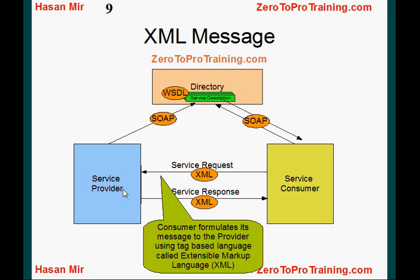XML is a tag-based language. If you want to see what a tag-based language looks like, go to your browser, open up any web page, and go to view page source, or whatever that option is called in your browser, and you can see the tag-based language — because HTML is also a tag-based language, and XML looks very similar. So now we understand where XML fits into the picture.